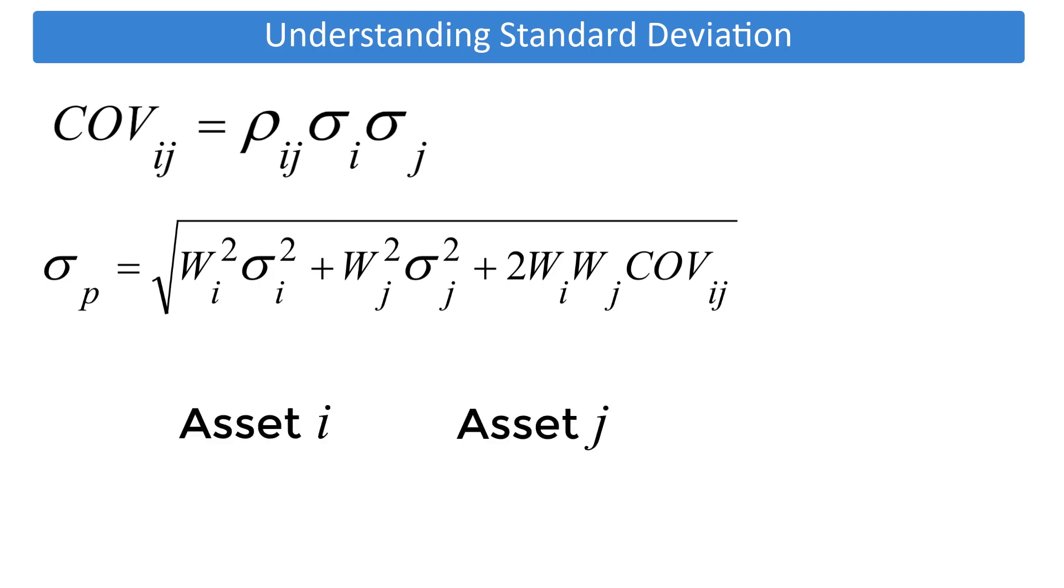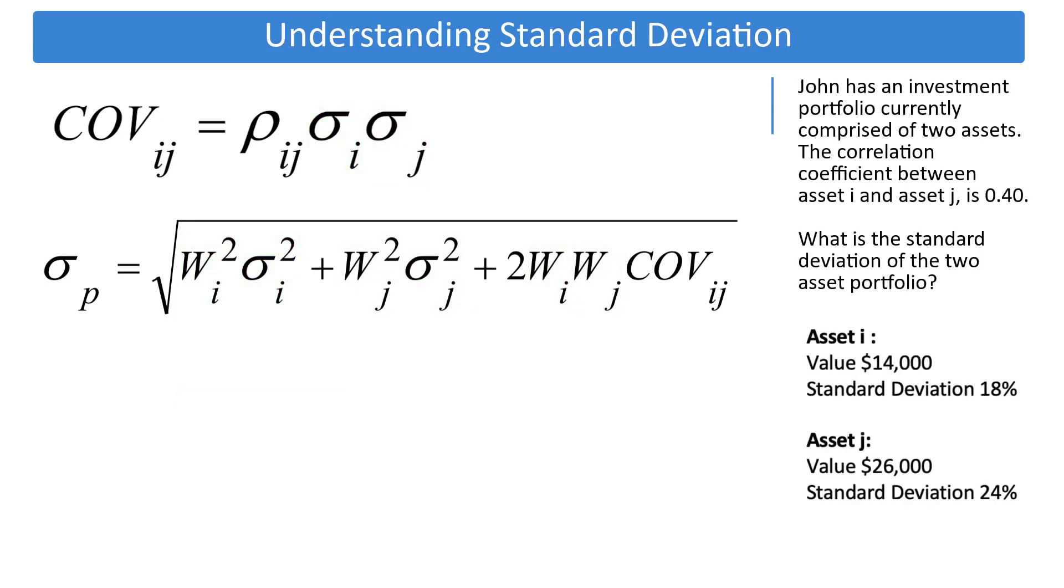The purpose of the subscripted I and J are to help distinguish between the two assets in the portfolio. For the purpose of working through these formulas, you have the following information.